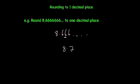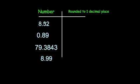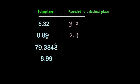Let's take a look at some questions. 8.32 rounded to one decimal place — the second decimal place is a 2, so we round down: 8.3. Next, 0.89 — the second decimal place is a 9, so we round up: 0.9. Next, 79.3843 rounded to one decimal place — the second decimal place is an 8, so we round up: 79.4.